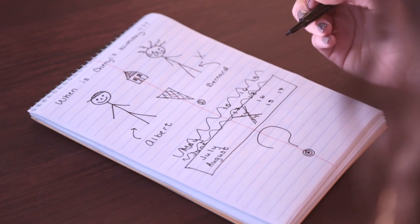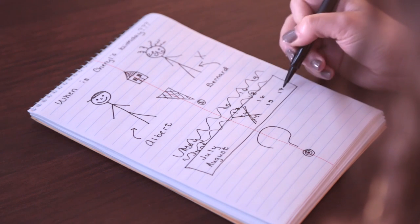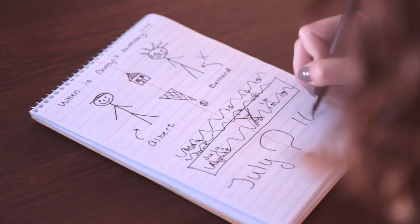If it had been August, Albert would be stumped with no way to know if Cheryl was born on the 15th or the 17th. The only answer left is July 16th.